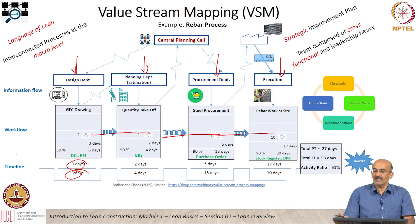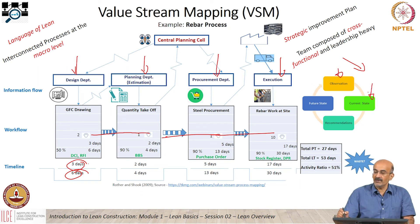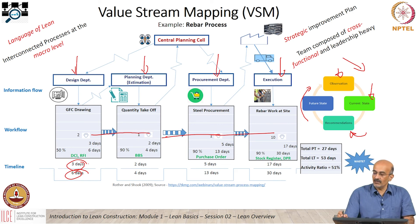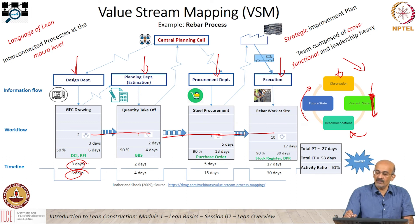To develop a value stream map, there are four phases: you do observation on the process, develop the current state map, make recommendations, and then develop a future state map. In this development, we have only reached the current state. We need to make recommendations to improve efficiency and decrease waste — that will be the future state map. Once we implement the future state, we can observe how it performs and then continuously repeat this cycle to keep improving the process.